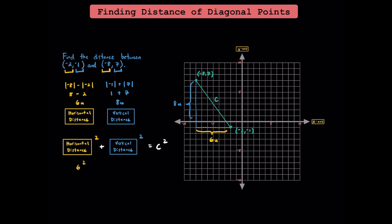Our horizontal distance is 6, so we have 6 squared plus, and our vertical distance is 8, so that's 8 squared. The sum of these two squares is going to equal C squared. 36 plus 64 is going to be 100, and that's equal to C squared. Taking the square root of both sides, we find that C is going to be equal to 10 units.